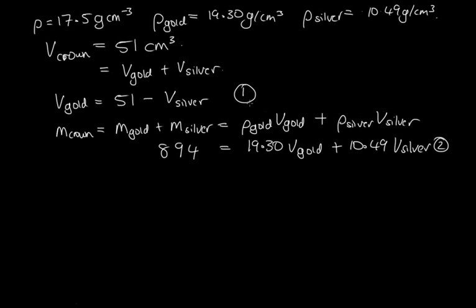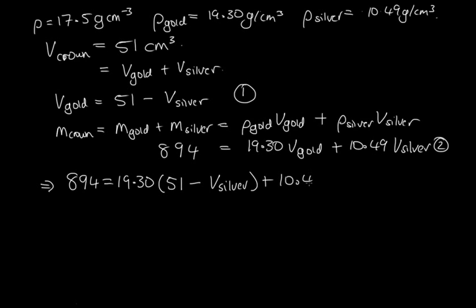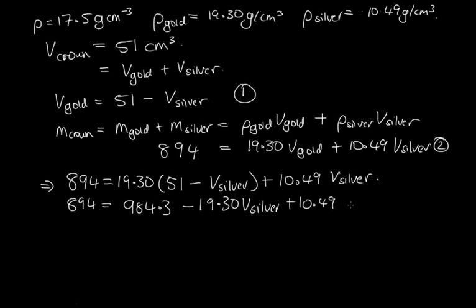We now have two equations to solve simultaneously. We replace the volume of gold with the expression from equation one. So we get: 894 equals 19.30 times (51 minus the volume of silver), plus 10.49 times the volume of silver. Expanding: 894 equals 984.3 minus 19.30 times the volume of silver, plus 10.49 times the volume of silver.